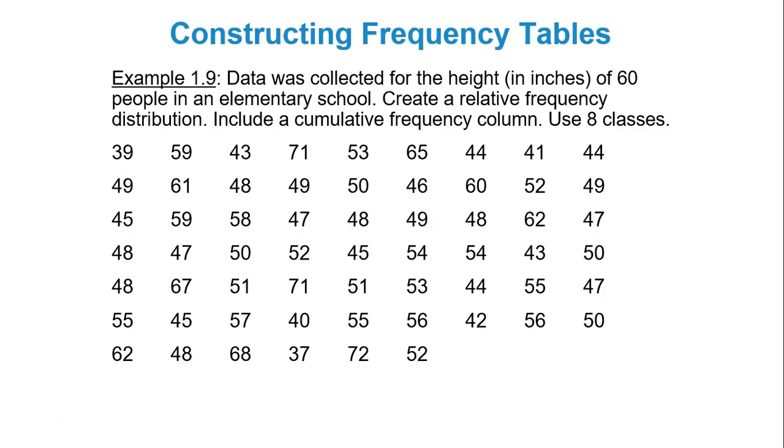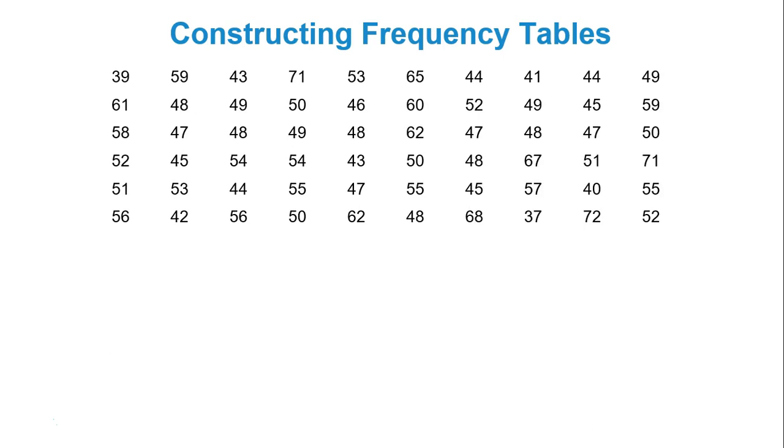So data was collected for the height in inches of 60 elementary people or 60 people in an elementary school. Create a relative frequency distribution. Include a cumulative frequency column. Please use eight classes. So I have here all the different heights in inches. There are 60 heights total for 60 people. So first step is to identify how many classes you want, how many groups of data. In this case I'm going to do eight classes because that's what they told me.